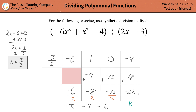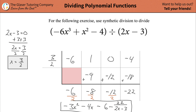And then your remainder — whatever the sign is, it becomes a subtraction. So you take the remainder, 22 in this case, and divide it by your divisor, 2x minus 3. So it's minus 22 over 2x minus 3.